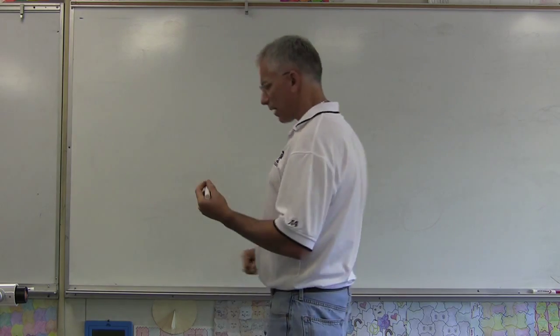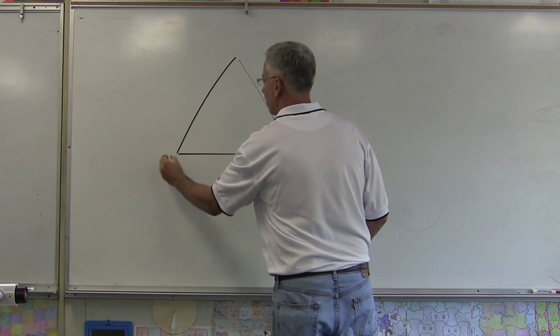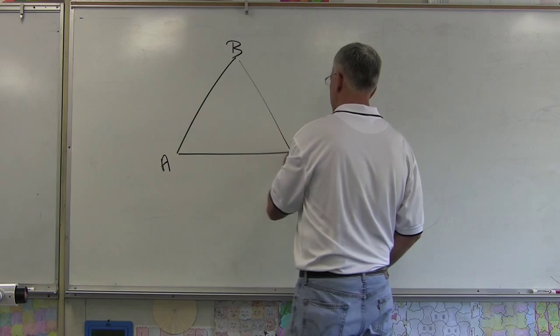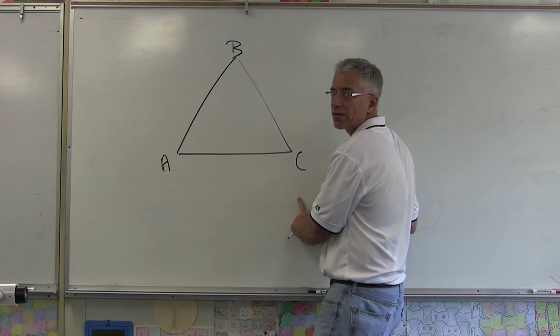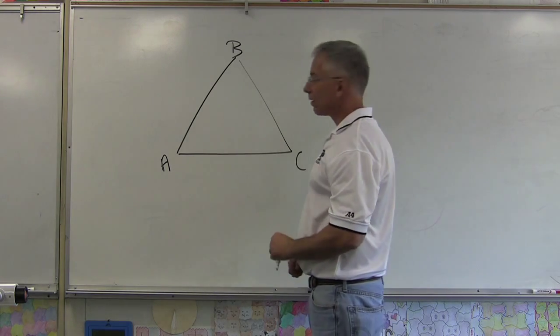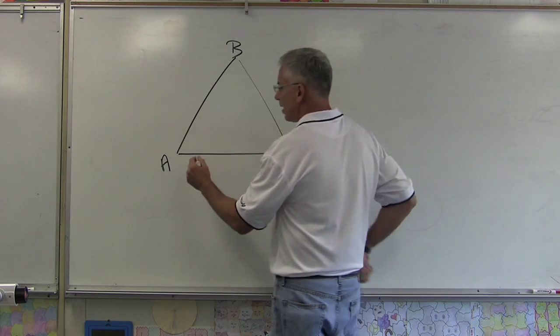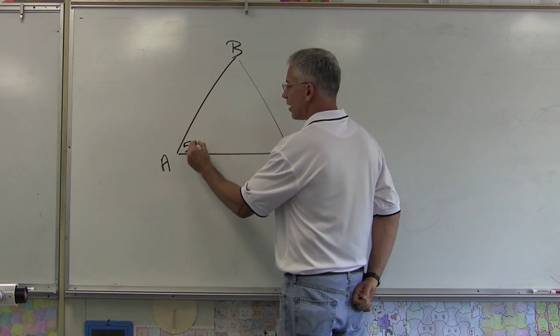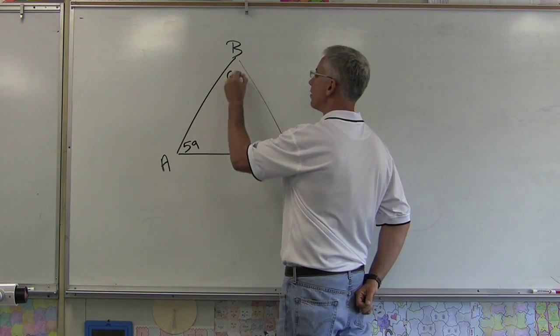So for example, if I gave you triangle ABC, a lot of times they'll put down here 'note the figure is not drawn to scale,' and when it's not drawn to scale, then it's probably out of whack a little bit. But say this angle right here was 59 degrees, this angle over here was 61 degrees, and this angle up here was 60 degrees.